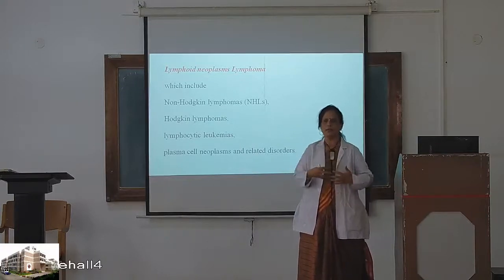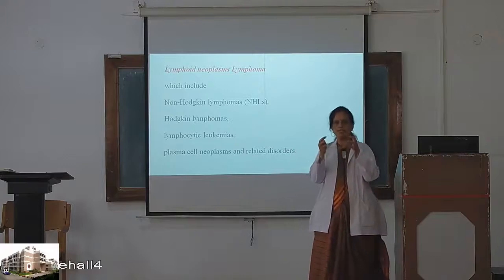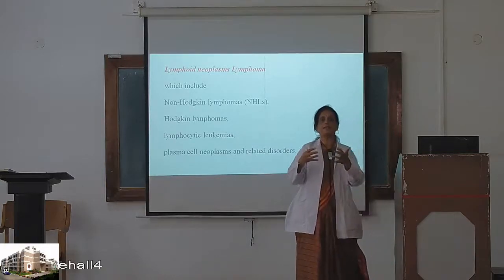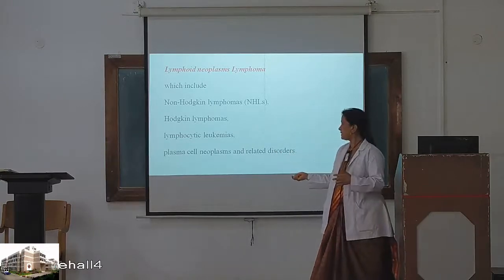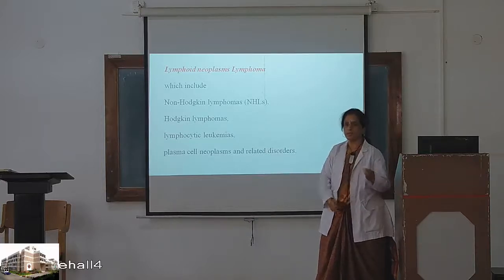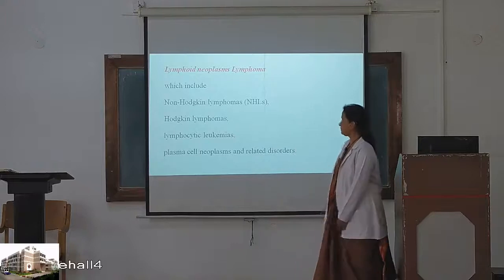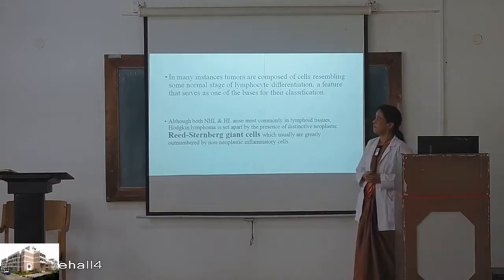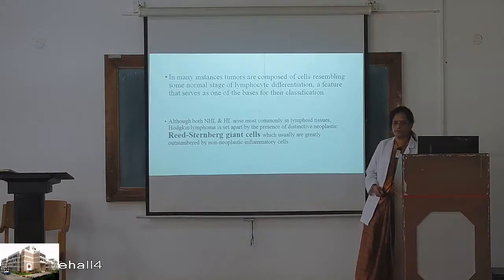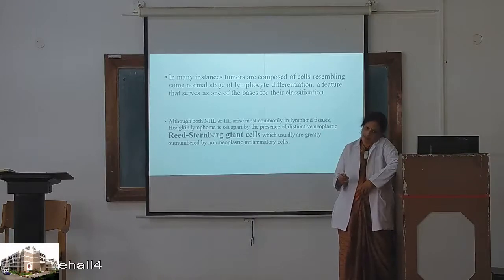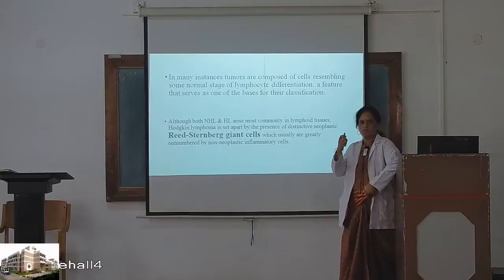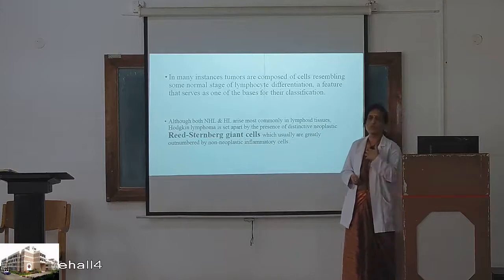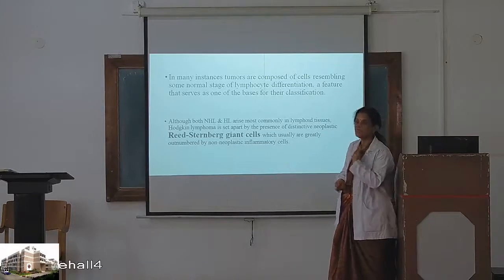What is the function of B cells — B lymphocytes? They produce immunoglobulin; they are involved in humoral immunity. These cells get transformed into plasma cells and produce antibodies, which are immunoglobulins. In many instances, tumors are composed of cells that resemble some normal stage of lymphocytic differentiation. B cells are bone marrow derived; T cells are thymus derived cells.